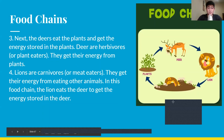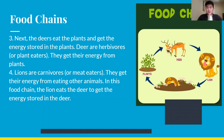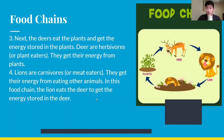After the plants, the energy stored in them flows to the next step — deers eat the plants and get the energy stored in them. Deers are herbivores, meaning plant eaters. Then lions, which are carnivores or meat eaters, get their energy from eating other animals. In this food chain, the lion eats the deer to get the energy stored in the deer, which got its energy from the plants, which got theirs from the sun. It's all a flow of energy.